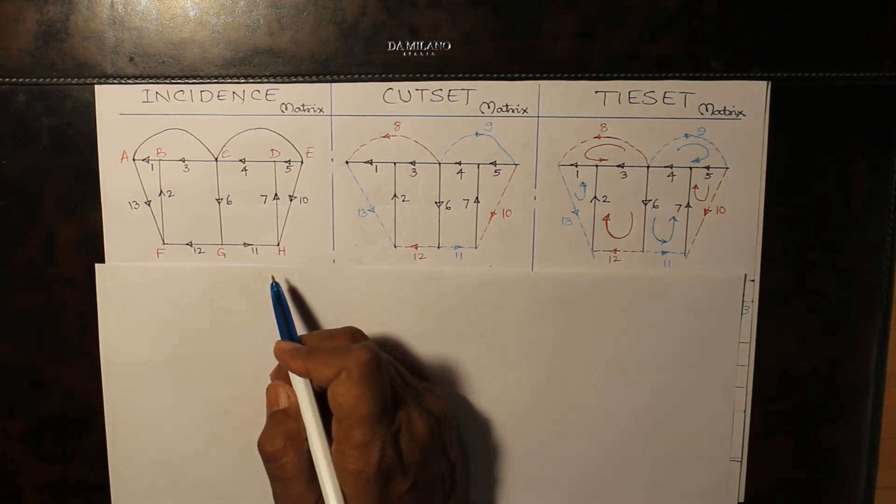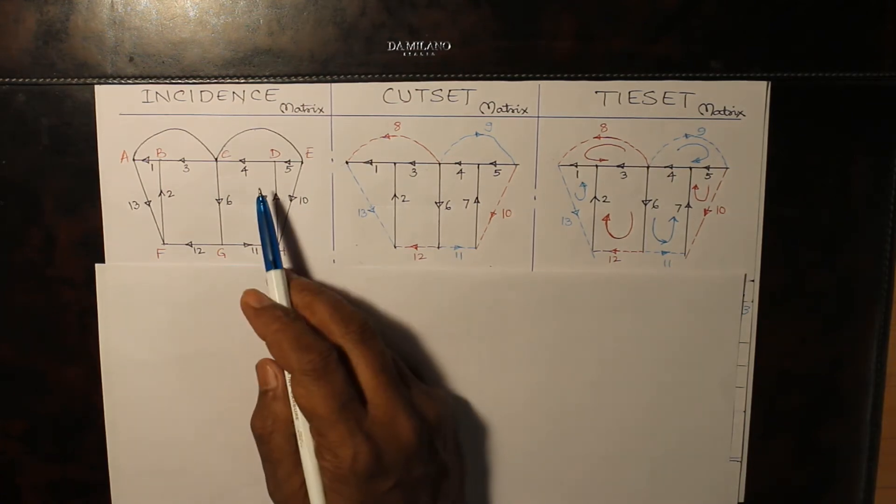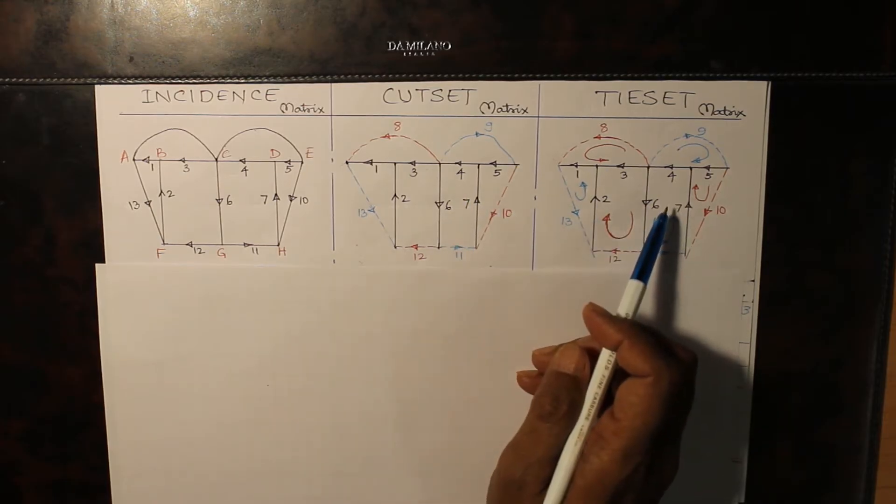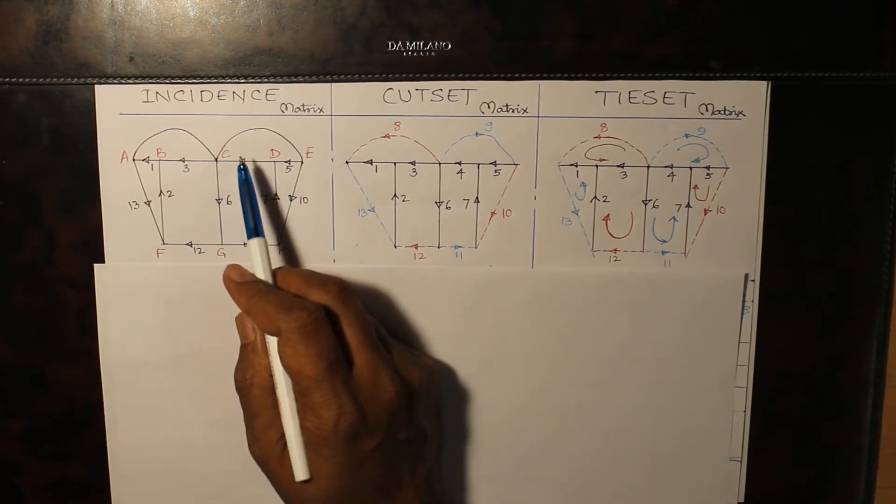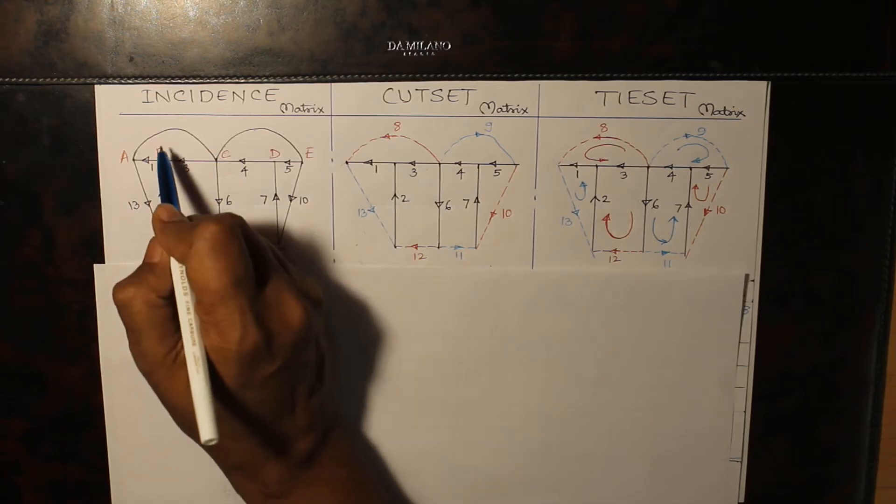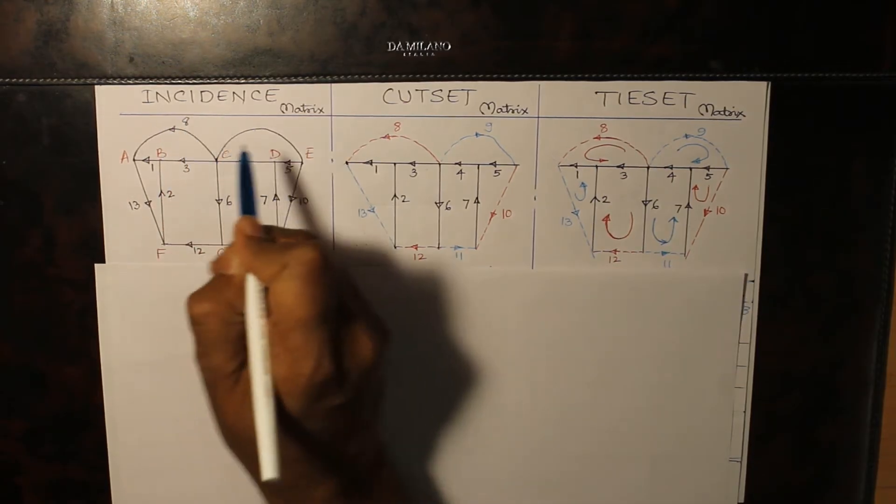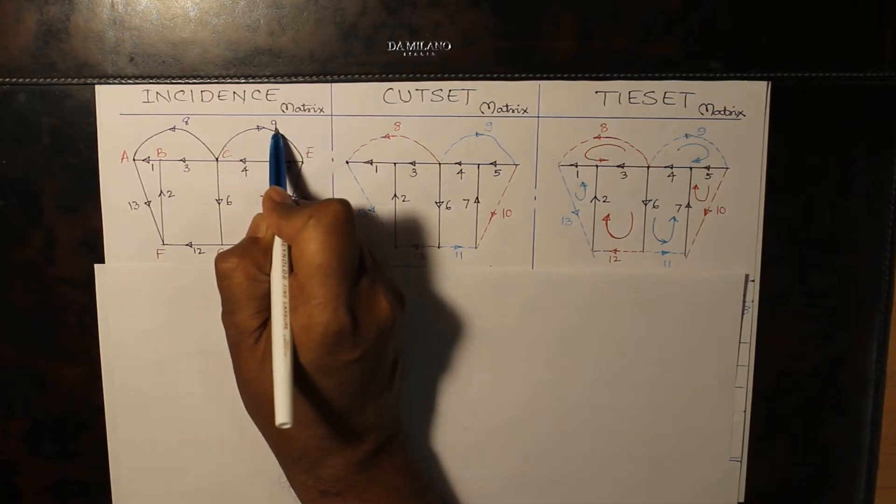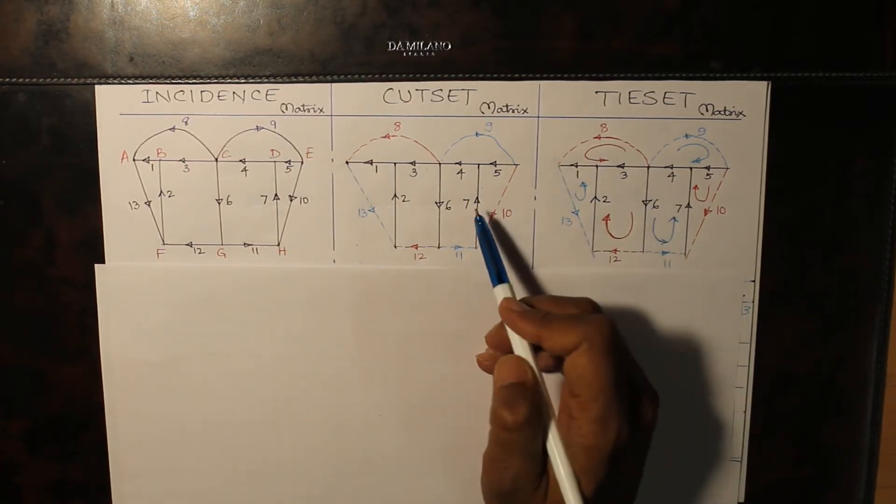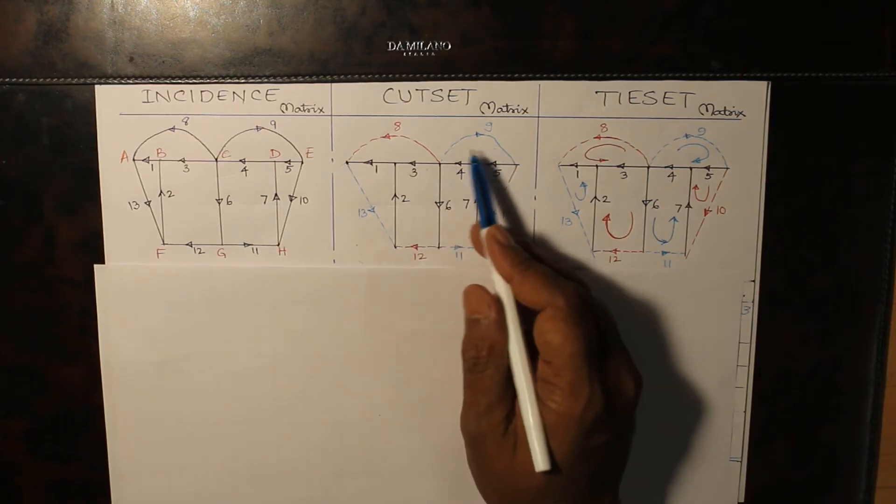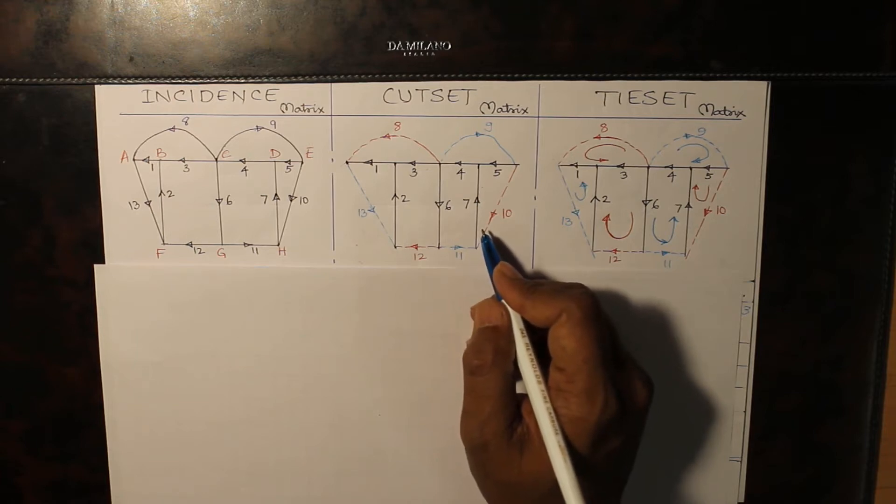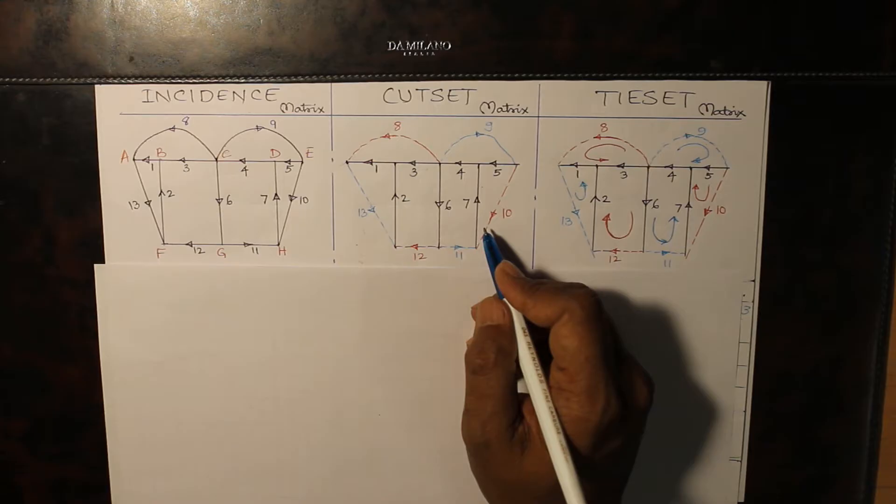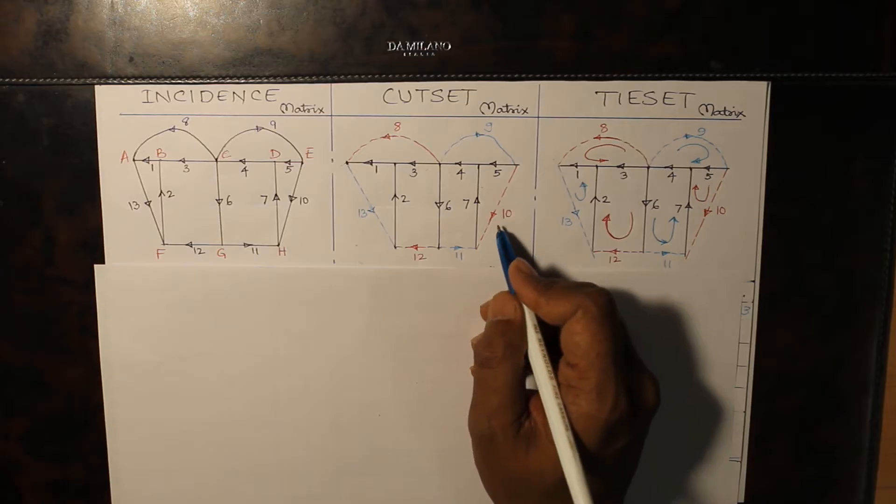Now we are taking another example and trying to find out the incidence matrix, cut set matrix and tie set matrix. One thing should be borne in mind that in incidence matrix, you need not show the twigs and links in a separate direction or in a separate color or in a dotted fashion. But when you are dealing cut set matrix and tie set matrix, it is advisable that you can use a pencil or you can use a dotted pen. But in examination in IP University, they don't permit any other color except blue and black. So you should bear in mind that only blue and black inks are to be used, not anything like red or green.